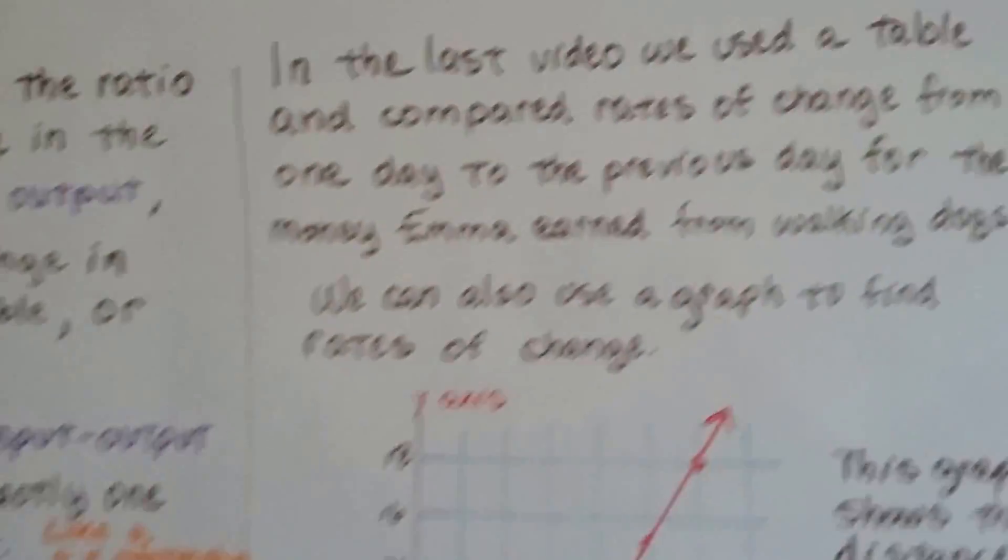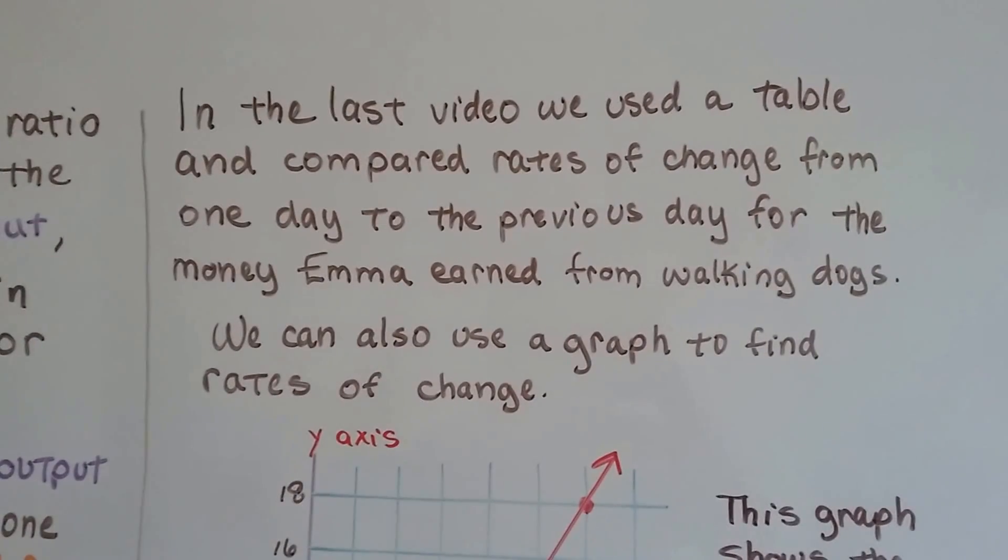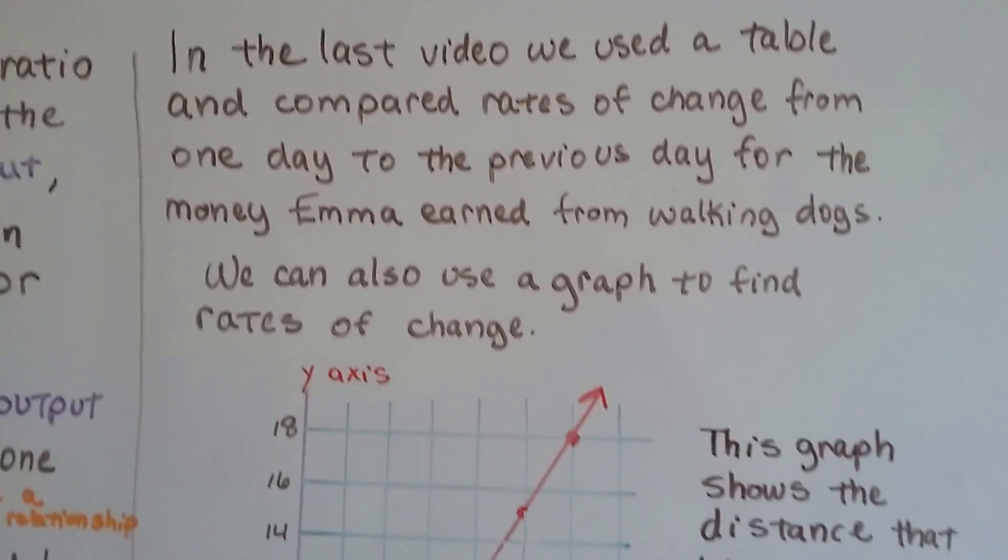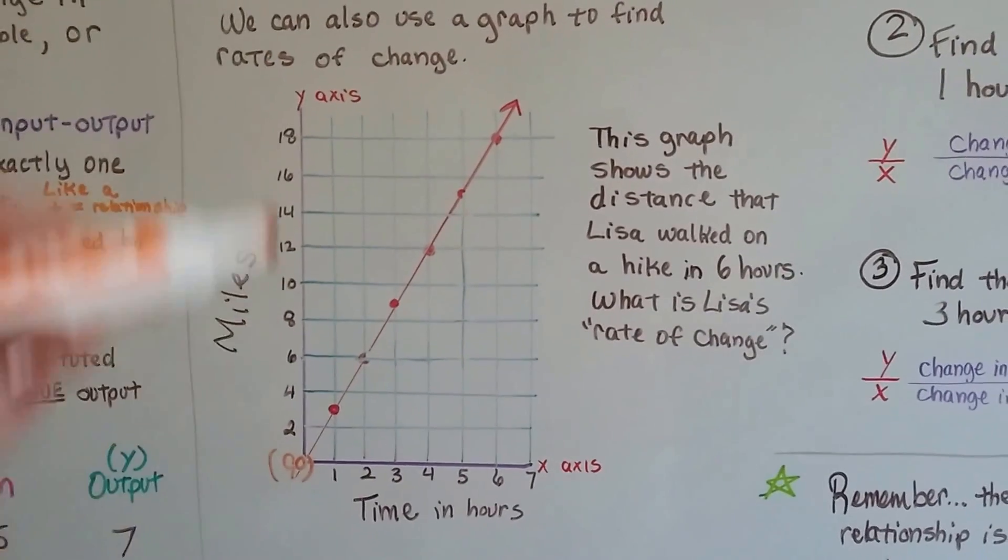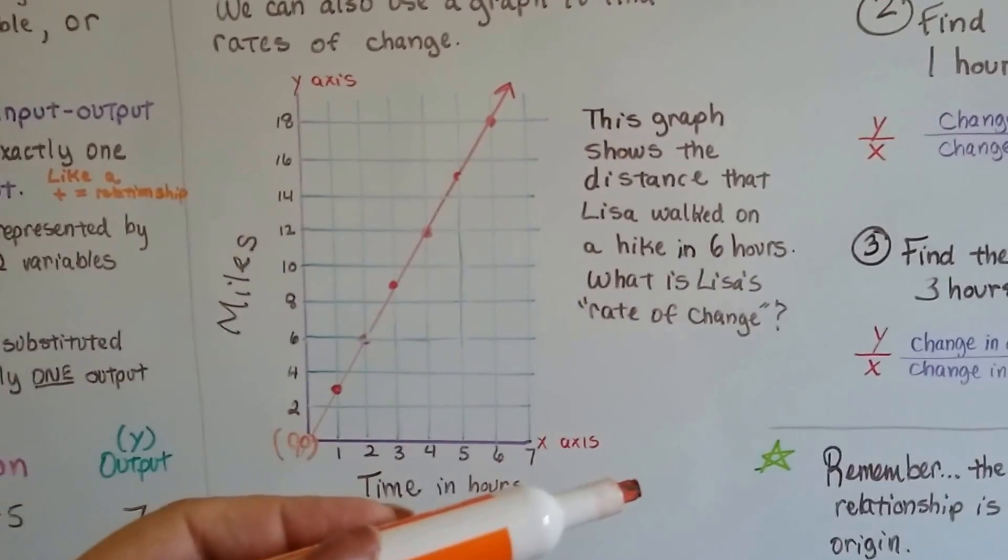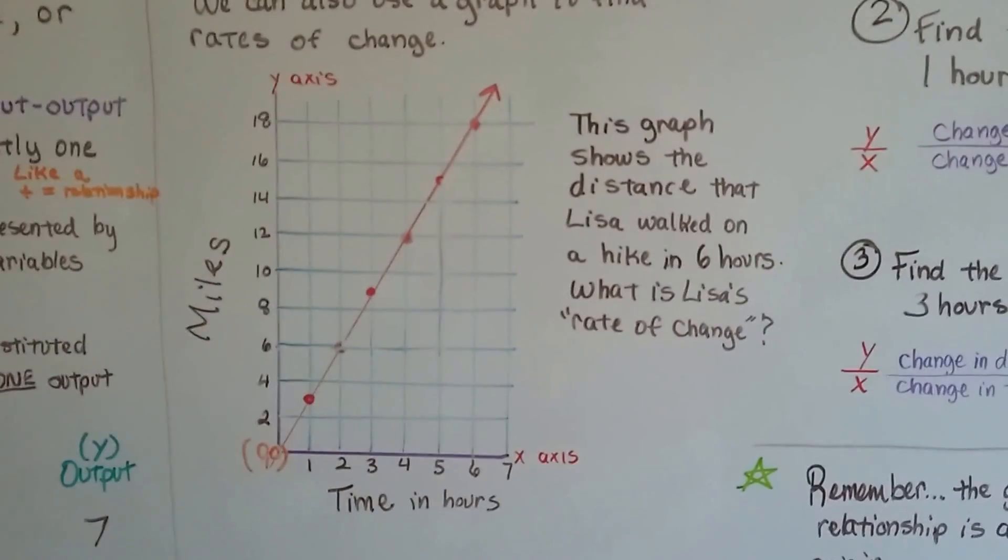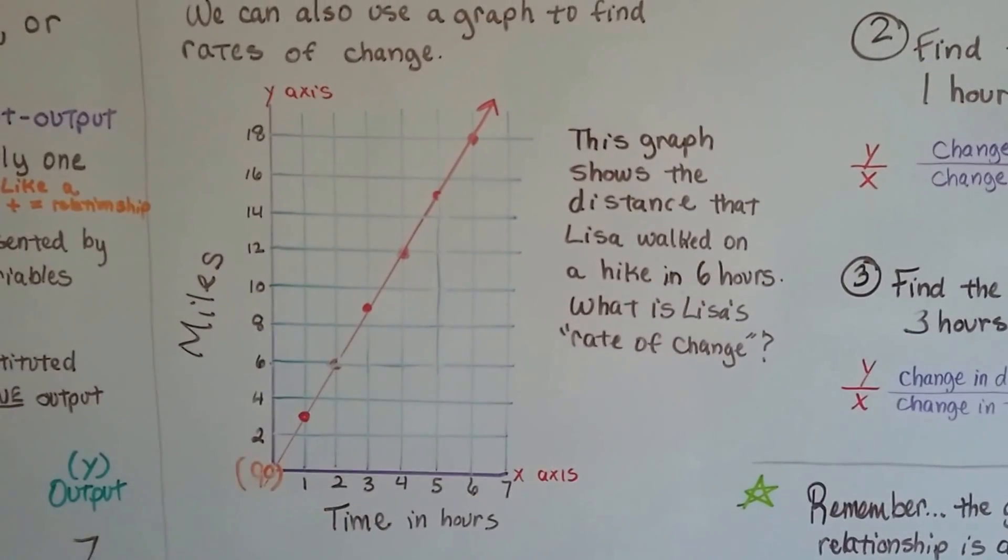In the last video, we used a table and compared rates of change from one day to the previous day for the money Emma earned from walking dogs. We can also use a graph to find rates of change. We've got a graph right here, and it shows miles going up for our y-axis and time in hours going horizontally for our x-axis. You can see our origin of 0, 0 right here. This graph shows the distance that Lisa walked on a hike in six hours. So what's Lisa's rate of change?